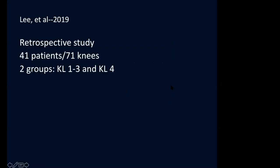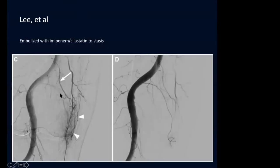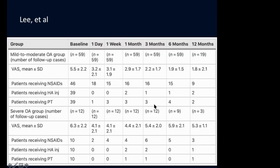In 2019, Dr. Lee et al. reported a retrospective study of 41 patients and 71 knees. I find this study valuable even though it's retrospective. Interestingly, they stratified patients from Kellgren-Lawrence 1 to 3 versus Kellgren-Lawrence 4. There was no significant difference in baseline characteristics overall except grading score. When treated, you can see on angiography the white arrows pointing to the medial side of the knee showing significant increase in vascularity and synovial blush—before embolization on the left and after embolization on the right.